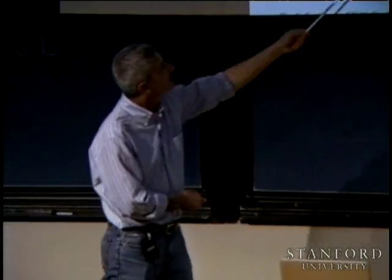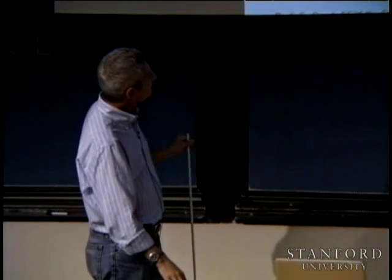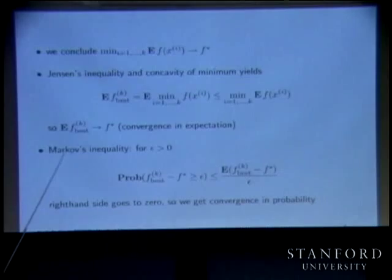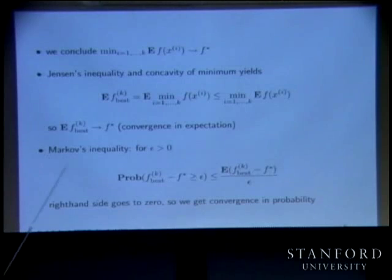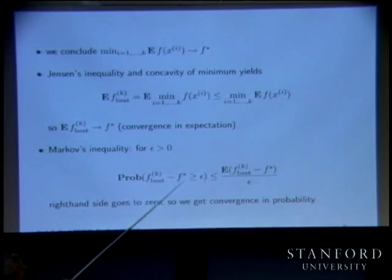Once you know this, you're done. You can get convergence in probability very easily because these random variables are non-negative. The probability that a positive random variable is bigger than epsilon is less than its expected value divided by epsilon. We know the numerator goes to zero — so for any epsilon, this goes to zero. That gives convergence in probability.